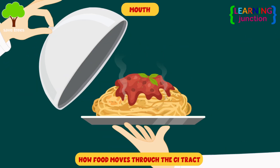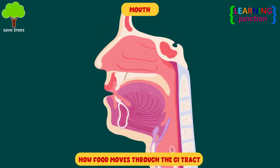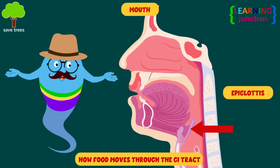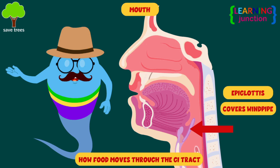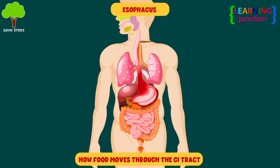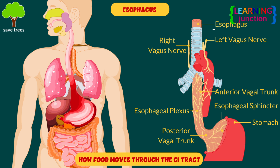Mouth — as you chew and swallow, your tongue pushes food into your throat. A small piece of tissue called the epiglottis covers your windpipe, which prevents choking. Esophagus — food travels down an elongated organ called the esophagus. At the bottom, your esophageal sphincter relaxes to let food travel to your stomach.